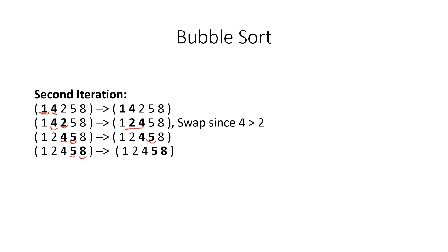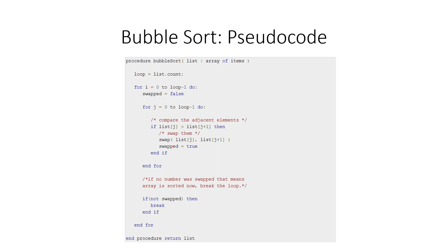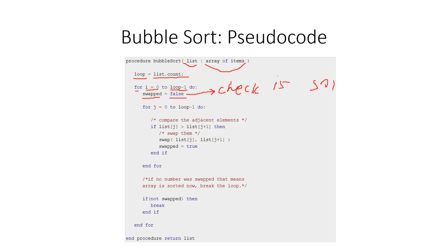Here is the pseudocode of bubble sort. We have some list of items. We create a variable 'loop' set to the size of the array, and a for loop that runs from zero to loop minus one. We create a boolean variable 'swapped' set to false by default — we need this variable to check whether our array is already sorted.